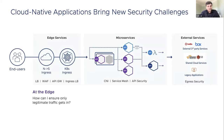As we go from users to the workload, at the edge we care about ensuring only legitimate traffic gets in and is appropriately load-balanced, rate-limited, etc. At the edge, security controls are implemented using web application firewalls, API gateways, and the Kubernetes cluster edge.